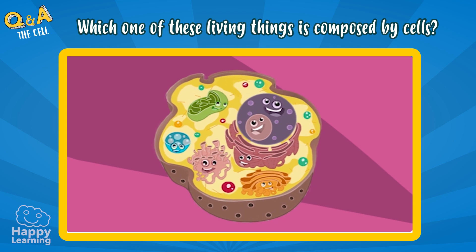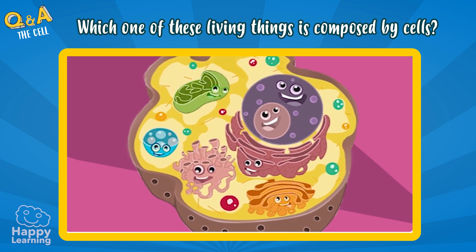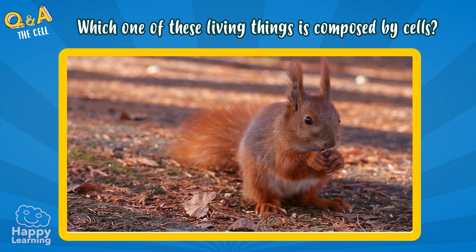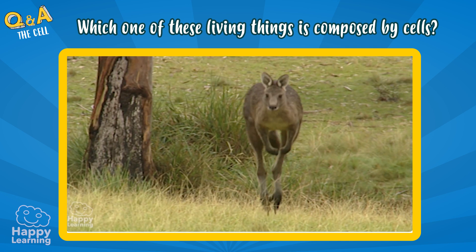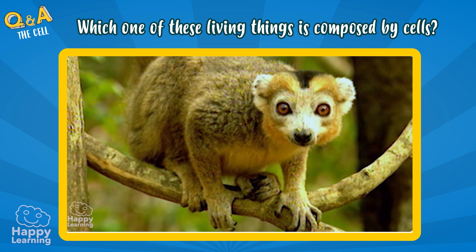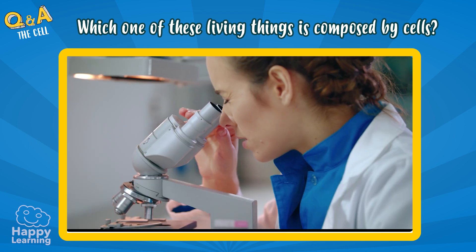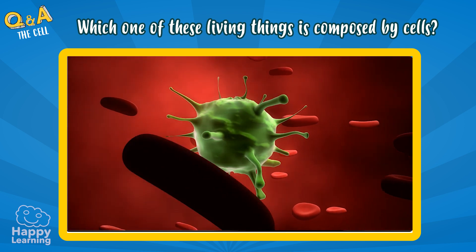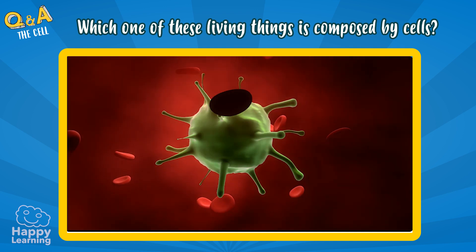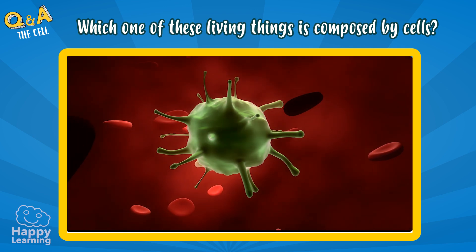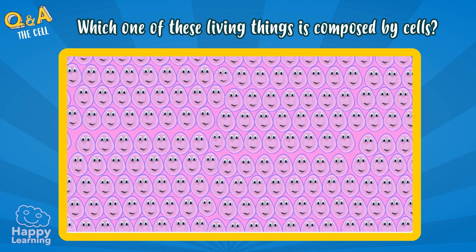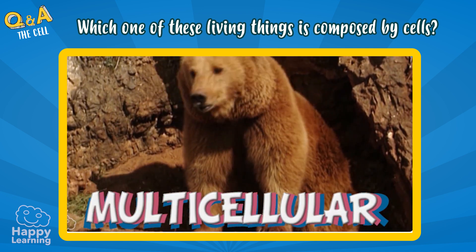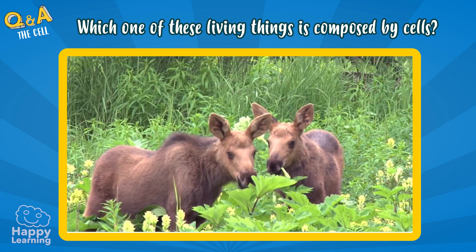Cells are the smallest parts in living things and we are all composed by cells. Some only have a single cell and we call them unicellular, for example some bacteria. Others have many cells and we call them multicellular, like animals or plants.